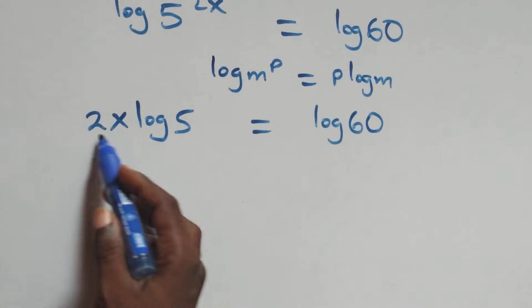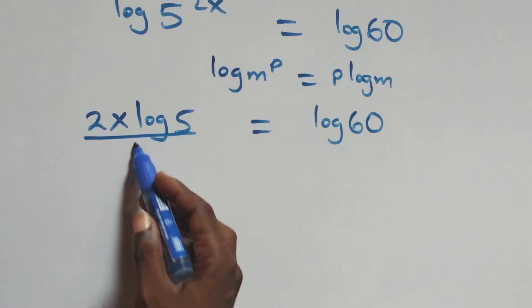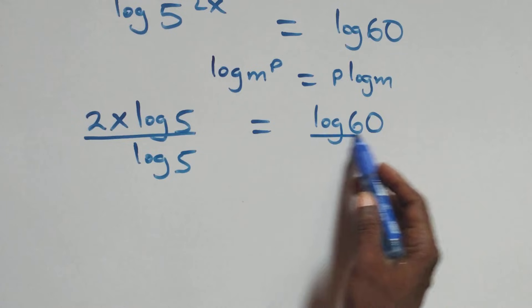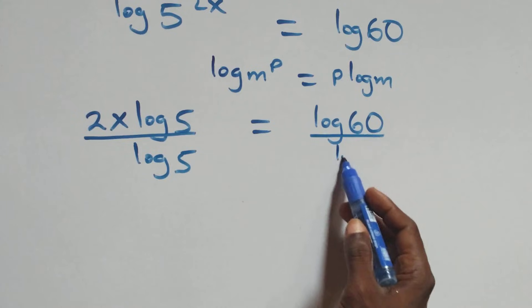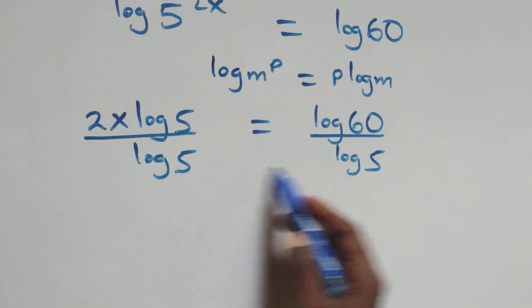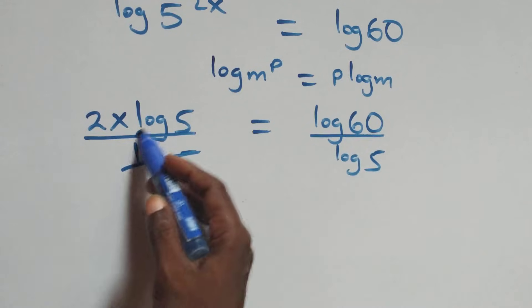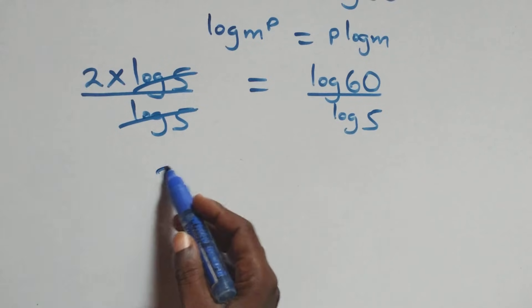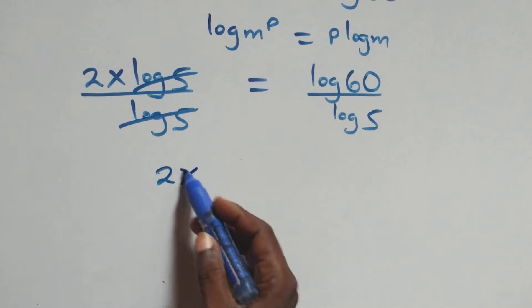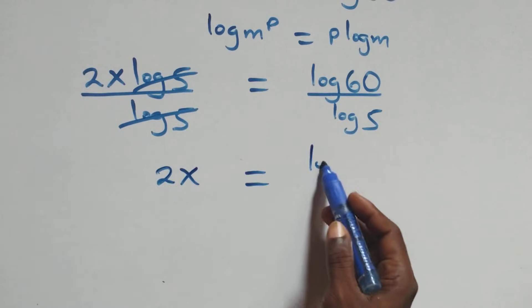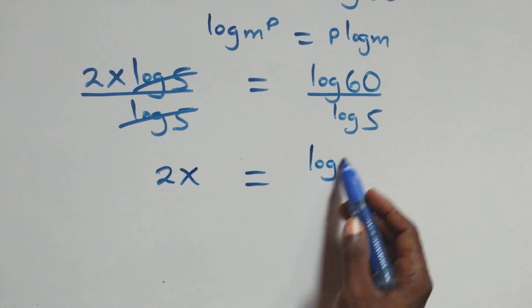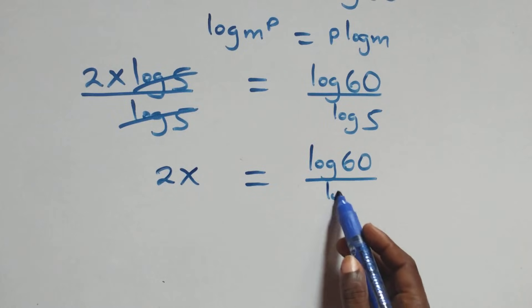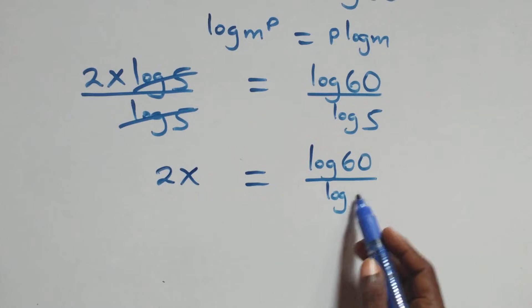We divide this side by log 5, and also divide this side by log 5. Log 5 cancels each other, and this becomes 2x equals to log 60 over log 5.